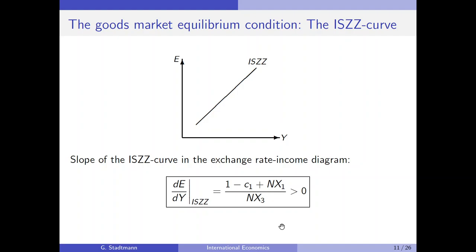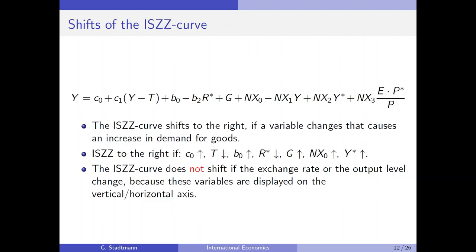The ISZZ curve shifts to the right when a variable changes that causes an increase in demand for domestic goods. The ISZZ curve shifts to the right if C0 increases, B0 increases, government spending increases, the autonomous component of net exports NX0 increases, foreign GDP increases, the tax rate decreases, or the foreign interest rate decreases. The ISZZ curve does not shift if the exchange rate or the output level changes, because these variables are displayed on the vertical and horizontal axes.